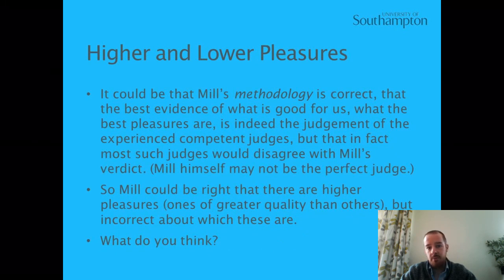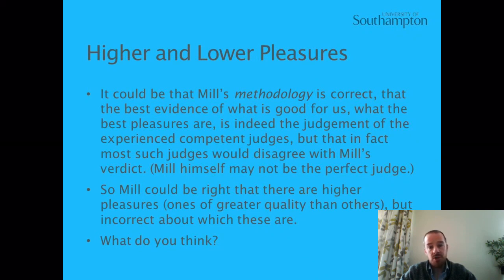Now it could be that Mill's methodology is correct — that the best evidence we have of what's good for us, of what the best pleasures are, is indeed the judgement of experienced competent judges — but that in fact most such judges would disagree with Mill's verdict. So Mill himself may not be a competent judge. Mill could be right that there are higher pleasures, ones of greater quality than others, but incorrect about which these are.